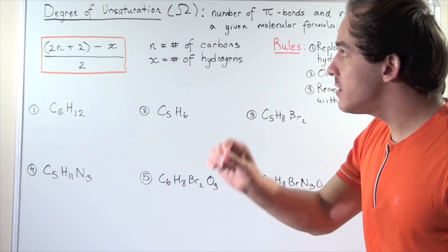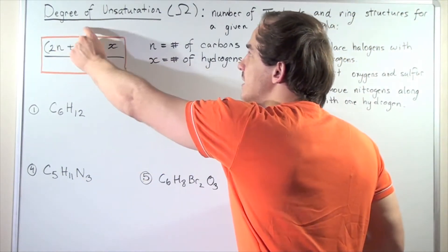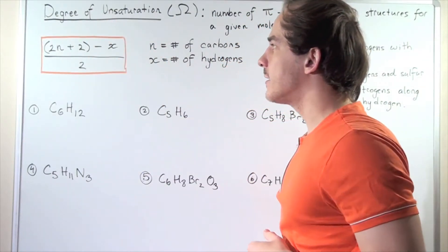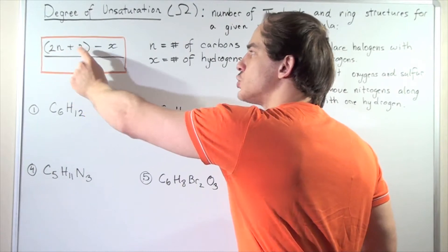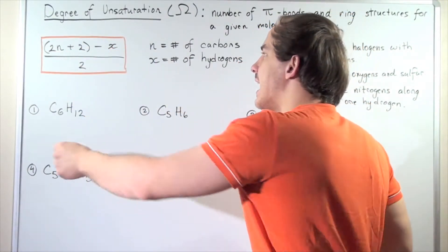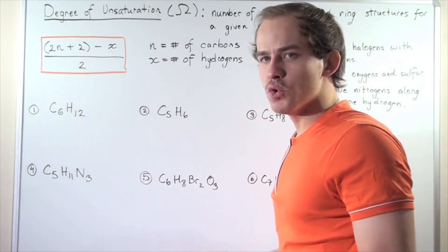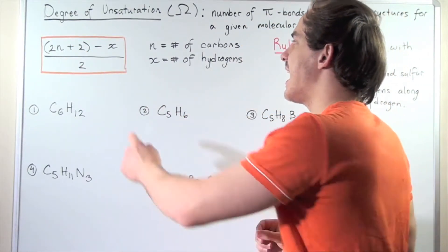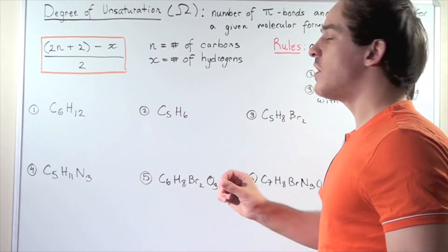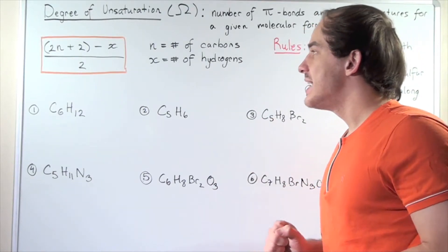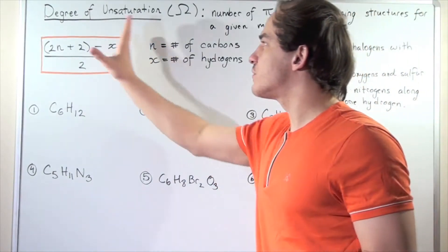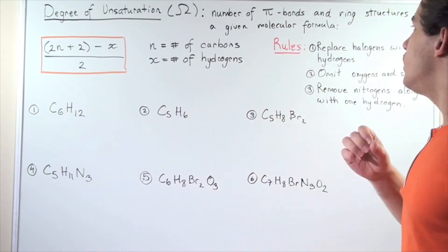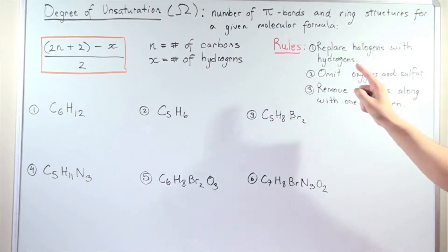The formula to find degree of unsaturation is: (2n + 2 - x) / 2, where n represents the number of carbons and x represents the number of hydrogen atoms. Whenever we use this formula to determine the degree of unsaturation, we have to follow three important rules.